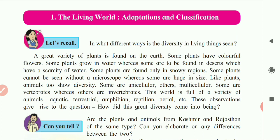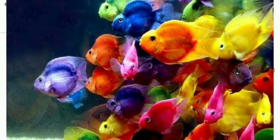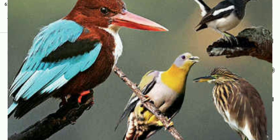We have seen in the last year about unicellular animals, multicellular animals, invertebrate animals, and vertebrate animals. According to their habitat, there are other groups also: aquatic animals, terrestrial animals, amphibians, reptilians, and aerial animals.